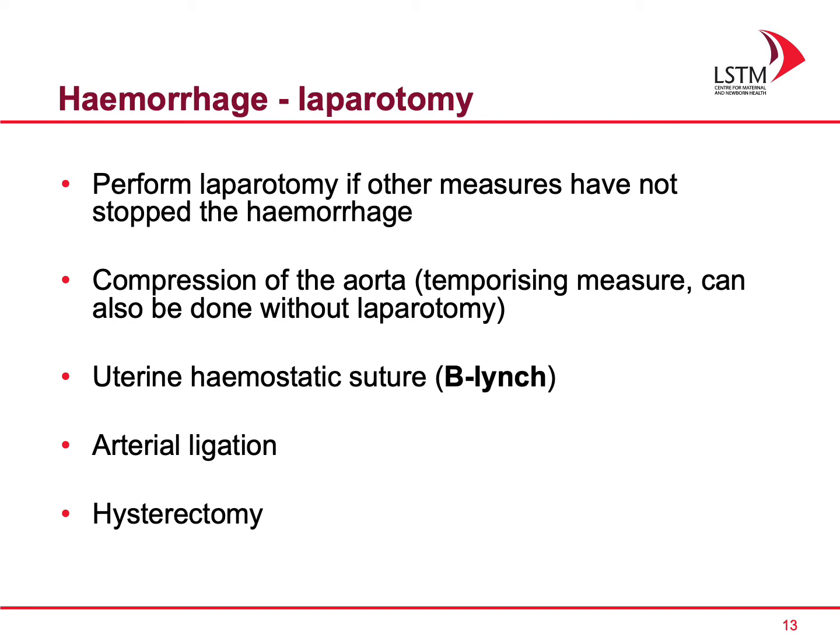If you have done all this and the patient is still bleeding, consider moving to theatre and performing a laparotomy. In theatre, you can compress the aorta temporarily as you plan next steps. You can use a haemostatic suture such as a B-Lynch suture, ligate the uterine arteries, and if none of this is working, perform a hysterectomy.